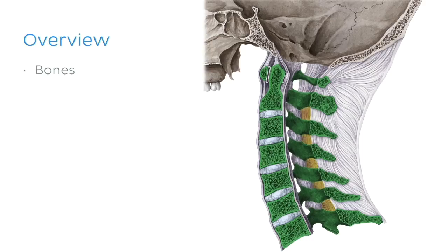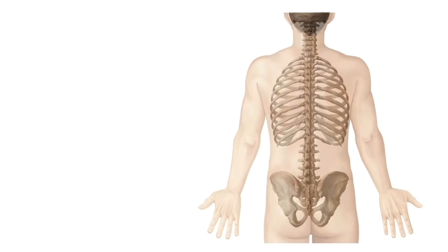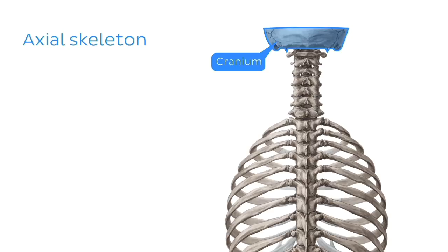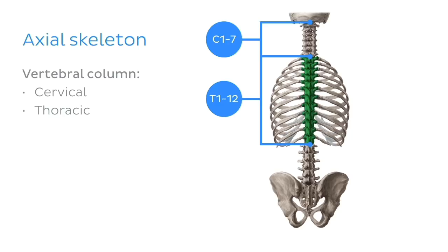Let's start by looking at this image and identifying the bones we're interested in — we're looking at a posterior aspect of the axial skeleton. Beginning with the superior aspect, we can see the skull or cranium, and next the vertebral column or spine, which can be divided into five sections: the cervical vertebrae, highlighted in green, the thoracic vertebrae, the lumbar vertebrae, the sacrum, and the coccyx. Attached to the thoracic vertebrae are the ribs, and attached to the sacrum are the bones that make up the pelvis.